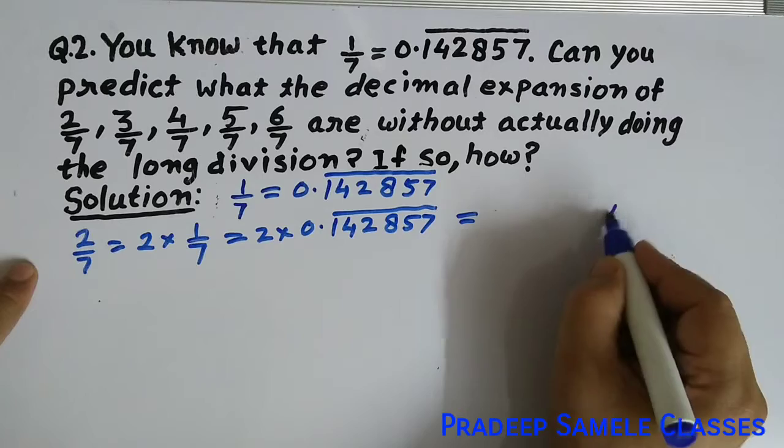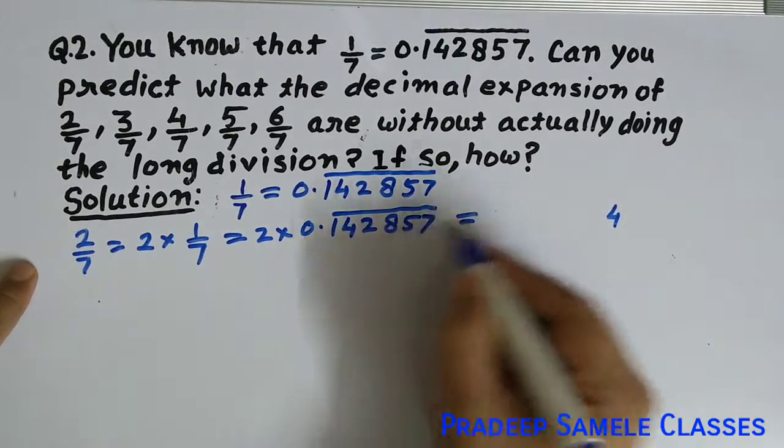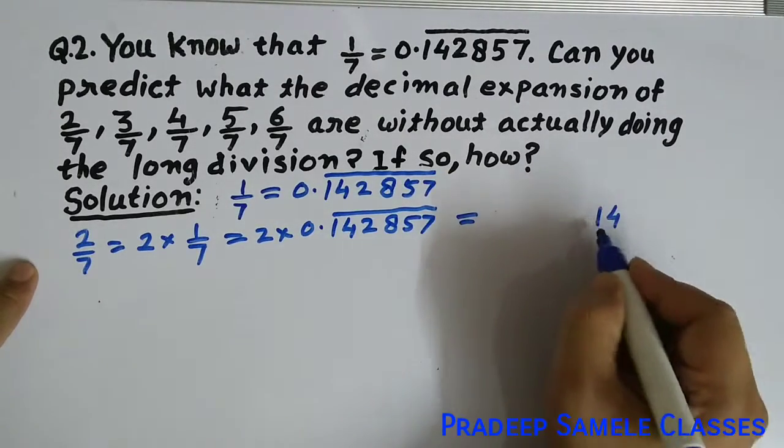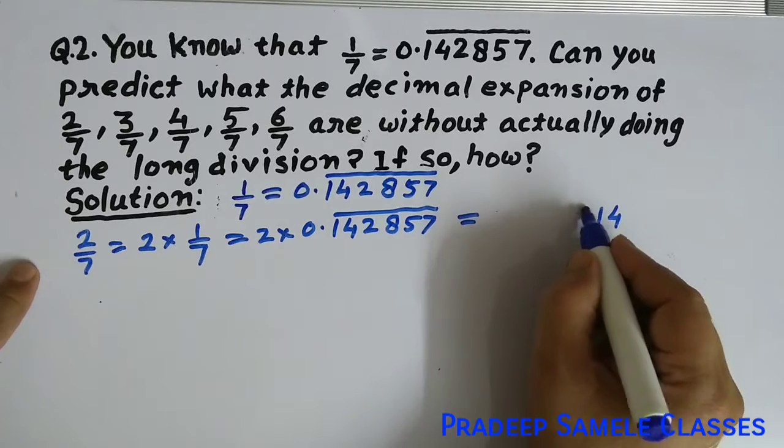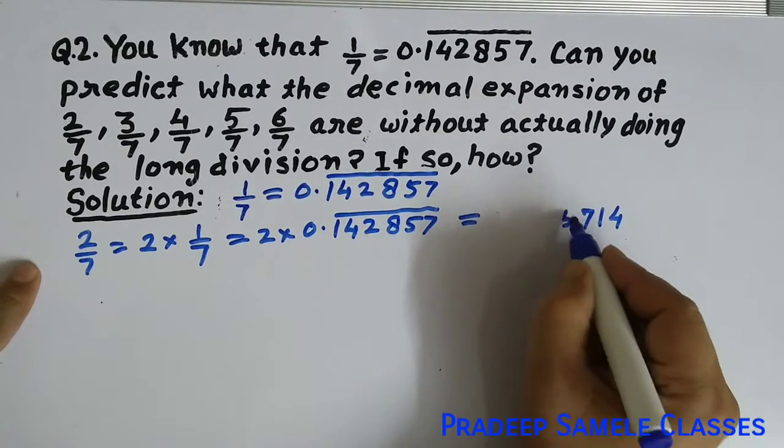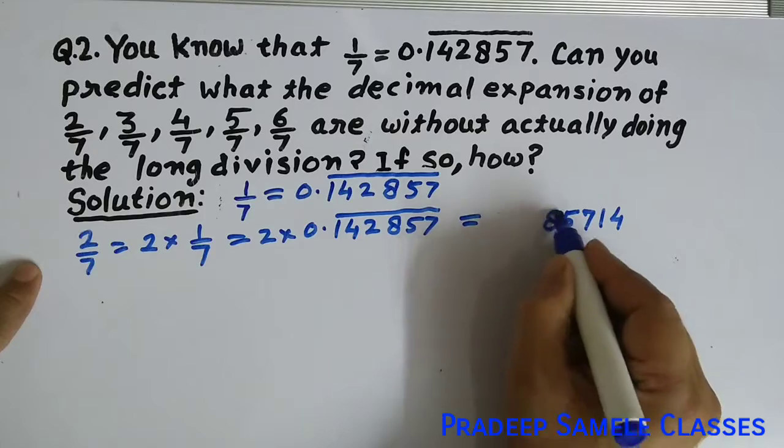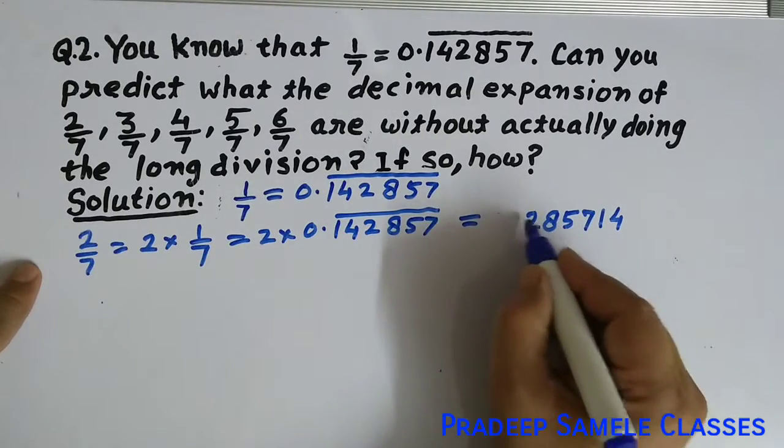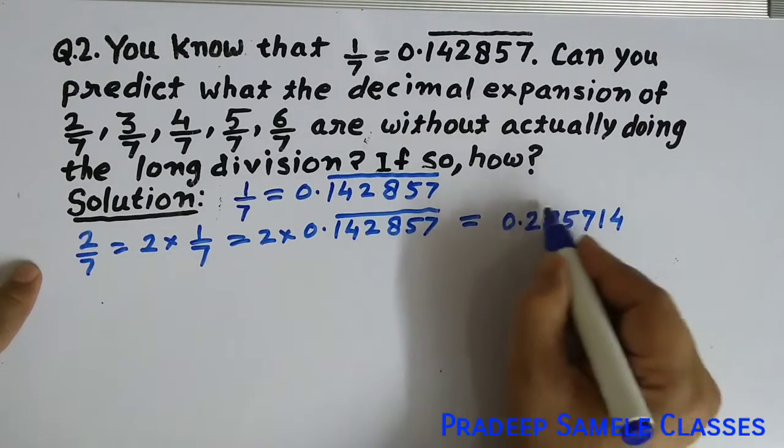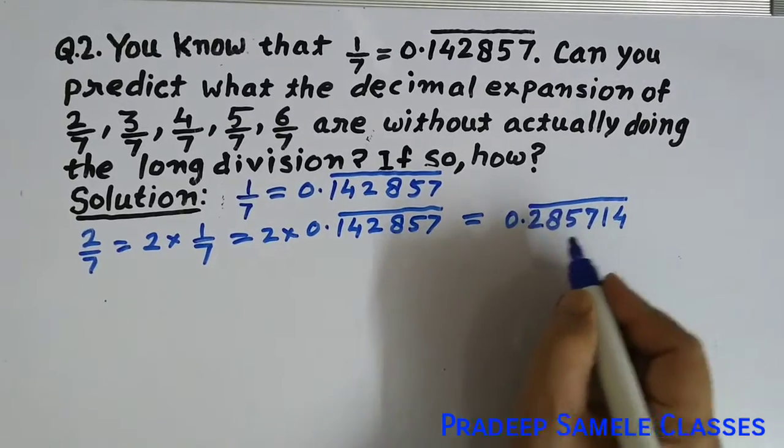When we multiply, 2 times 7 is 14, carry 1. Then 2 times 5 is 10 plus 1 is 11, carry 1. 2 times 8 is 16 plus 1 is 17, carry 1. 2 times 2 is 4 plus 1 is 5. 2 times 4 is 8, 2 times 1 is 2. With the decimal and bar notation, the answer is 0.285714 bar.